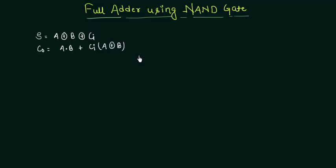So let's look at the sum first, then we will see what is the carry output. Here we are having 3 inputs to the sum, to our XOR gate: A, B, and CI.